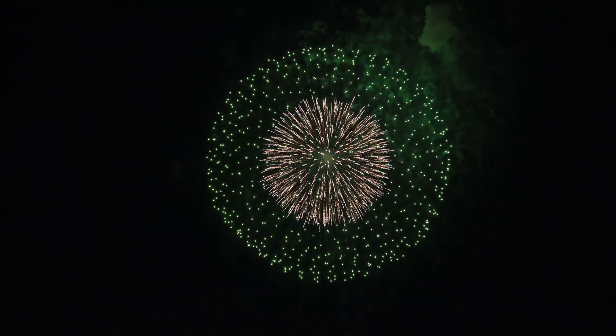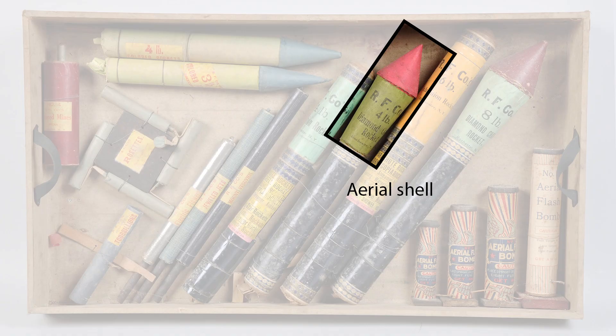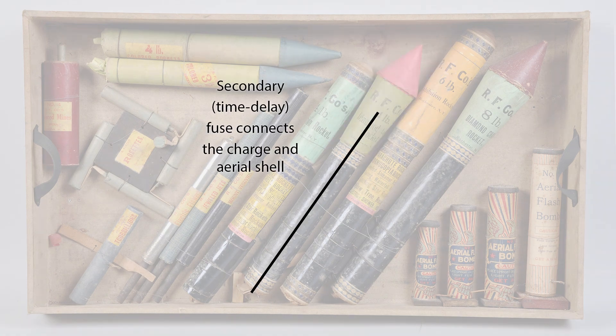The charge does not create the displays of light that fireworks are associated with. The colors of the fireworks are created by the aerial shell, which is usually located above the charge and contains gunpowder and stars. A secondary fuse, called a time-delay fuse, is connected to the primary fuse that goes to the charge and the aerial shell. The time-delay fuse is made to run down at the peak of the firework's height, so that the aerial shell explodes in the sky.